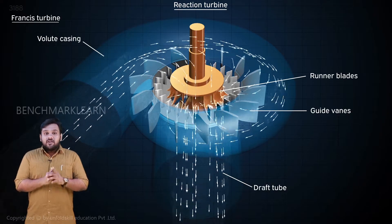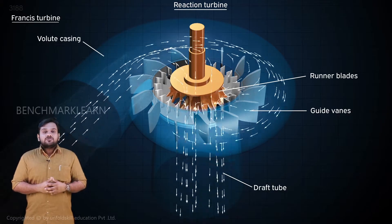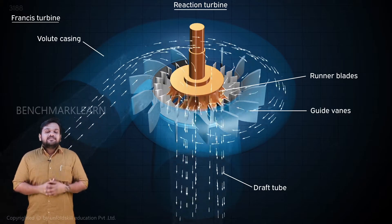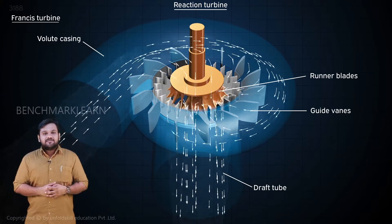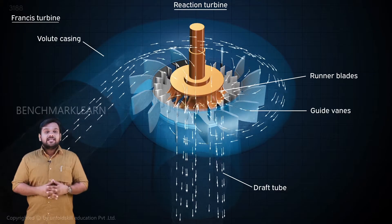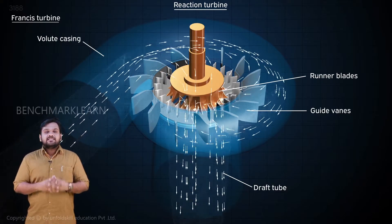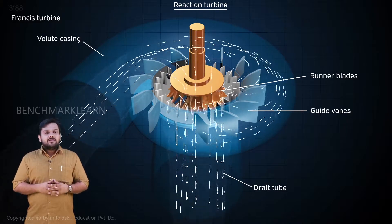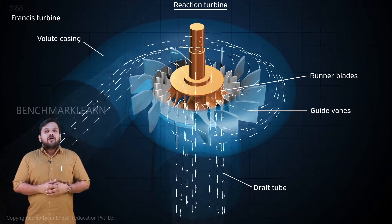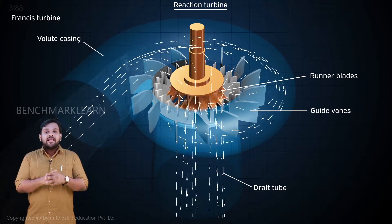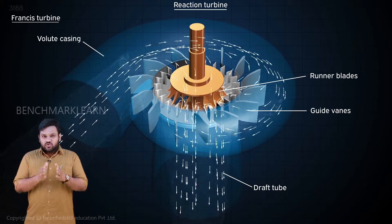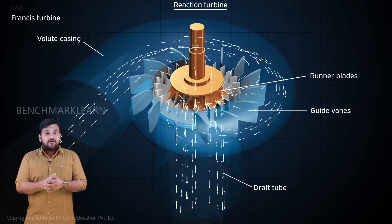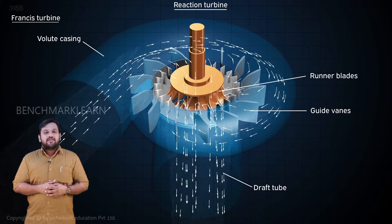Water at low pressure from the turbine flows through a tube called a draft tube. This has a gradually increasing cross section, so the pressure increases and the velocity decreases during the flow in the draft tube. At the end of the draft tube, the pressure of water will be at nearly atmospheric pressure. This eliminates the possibility of water going up from the reservoir to the turbine.